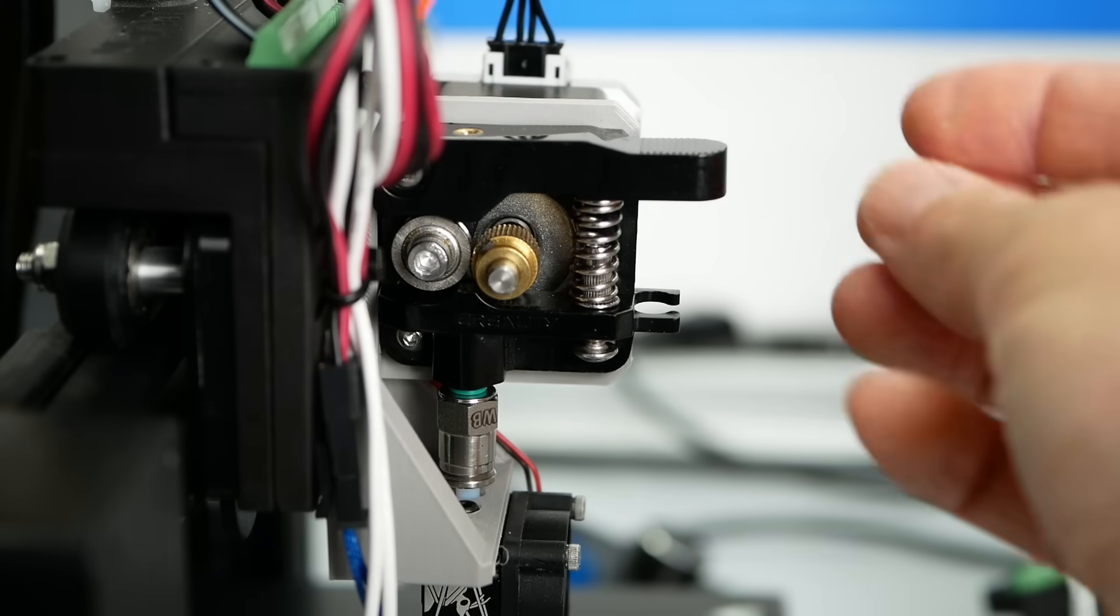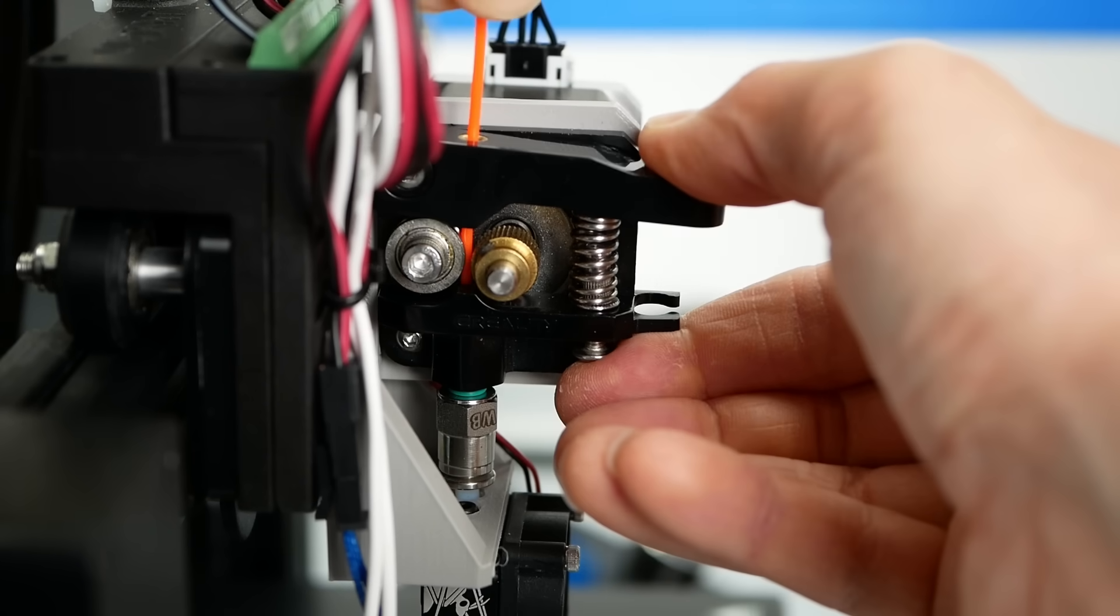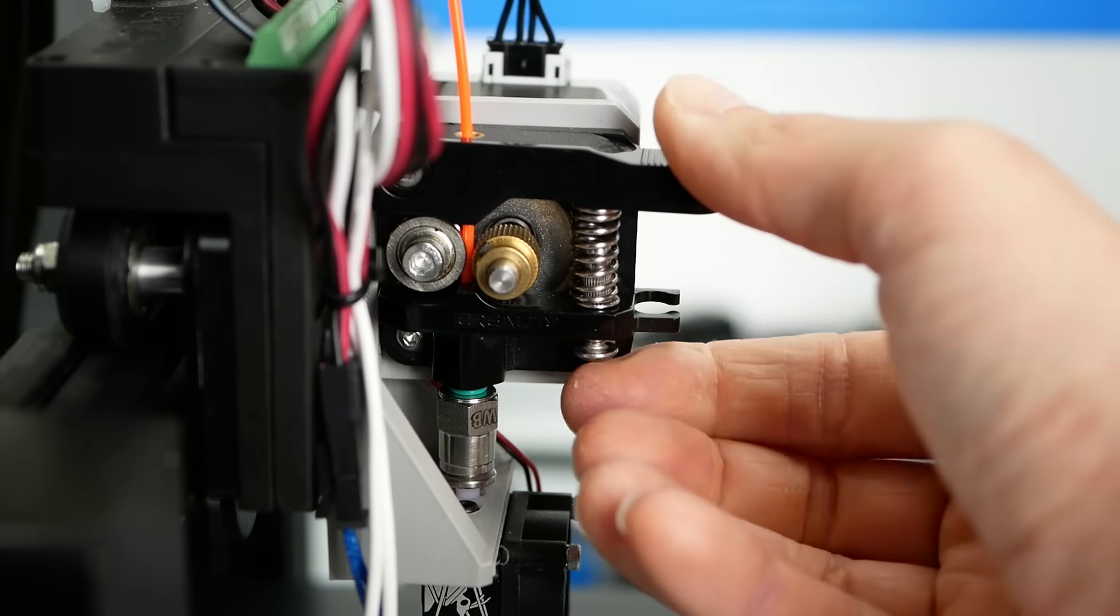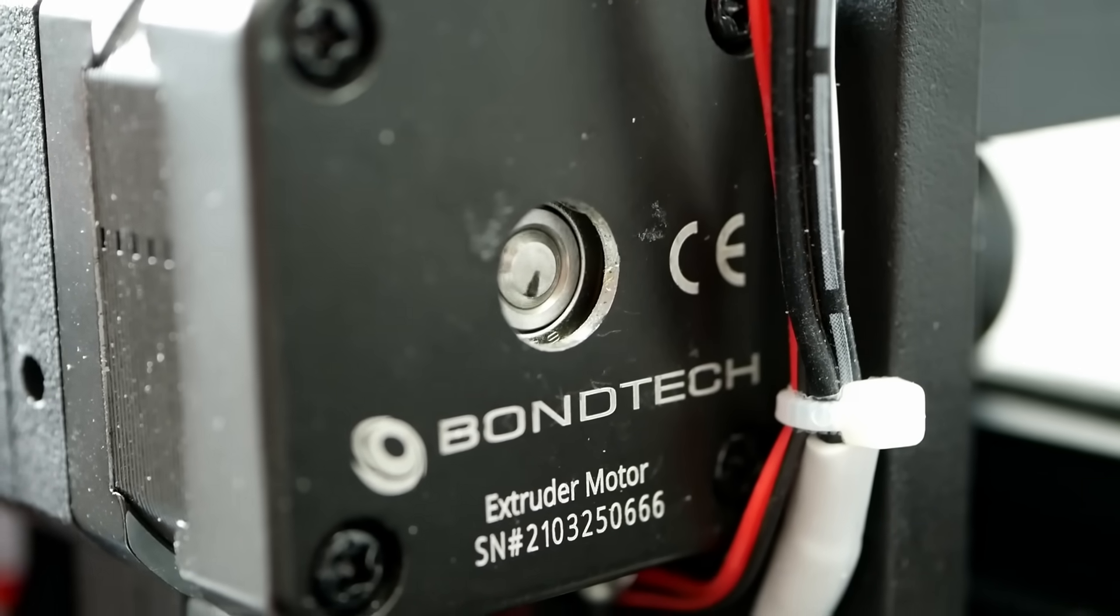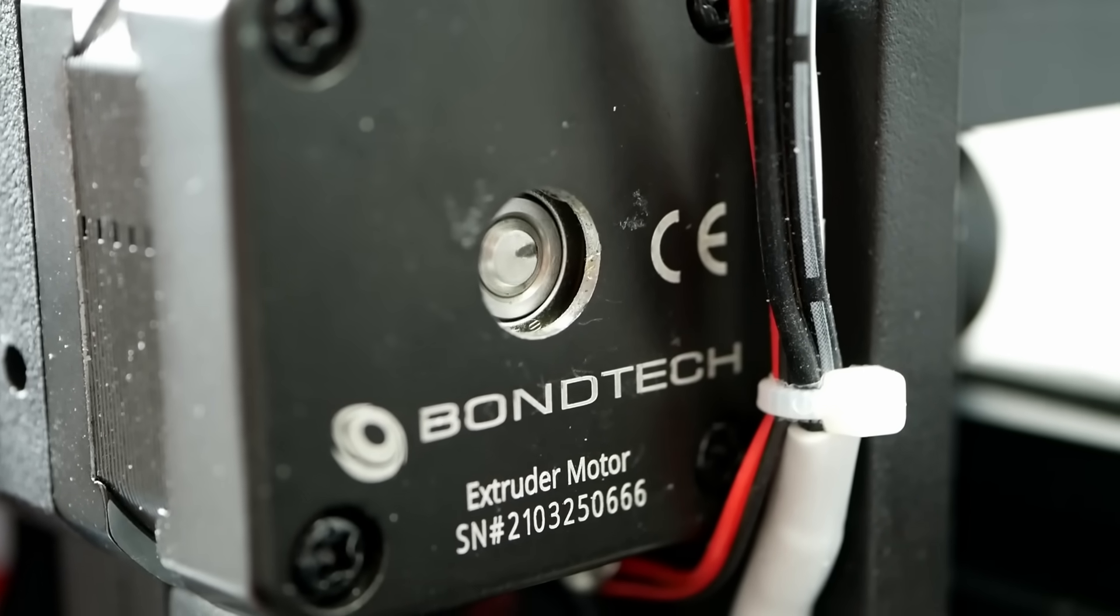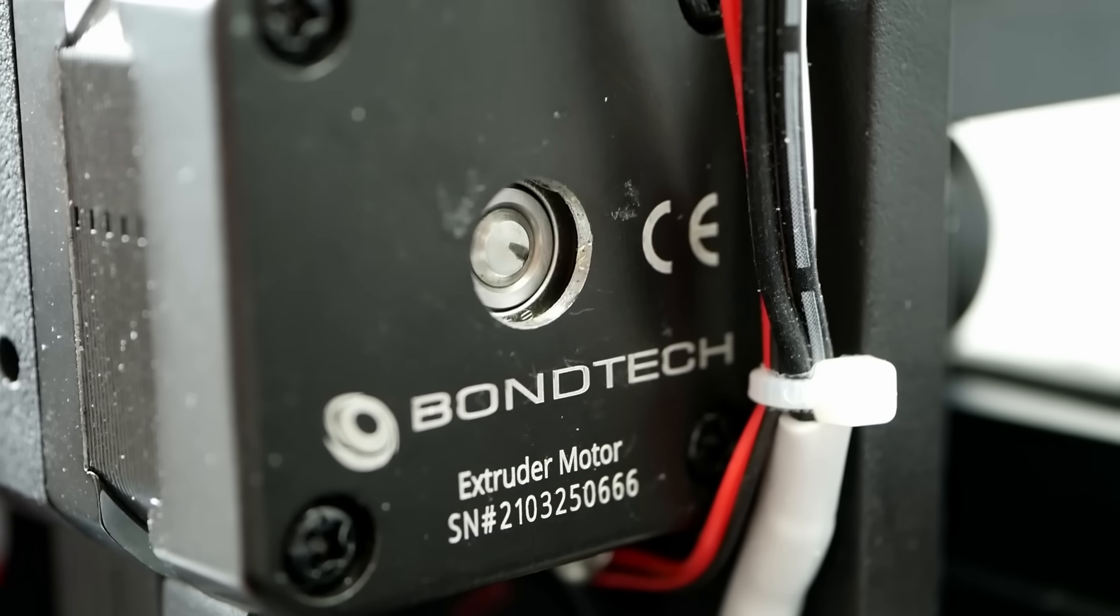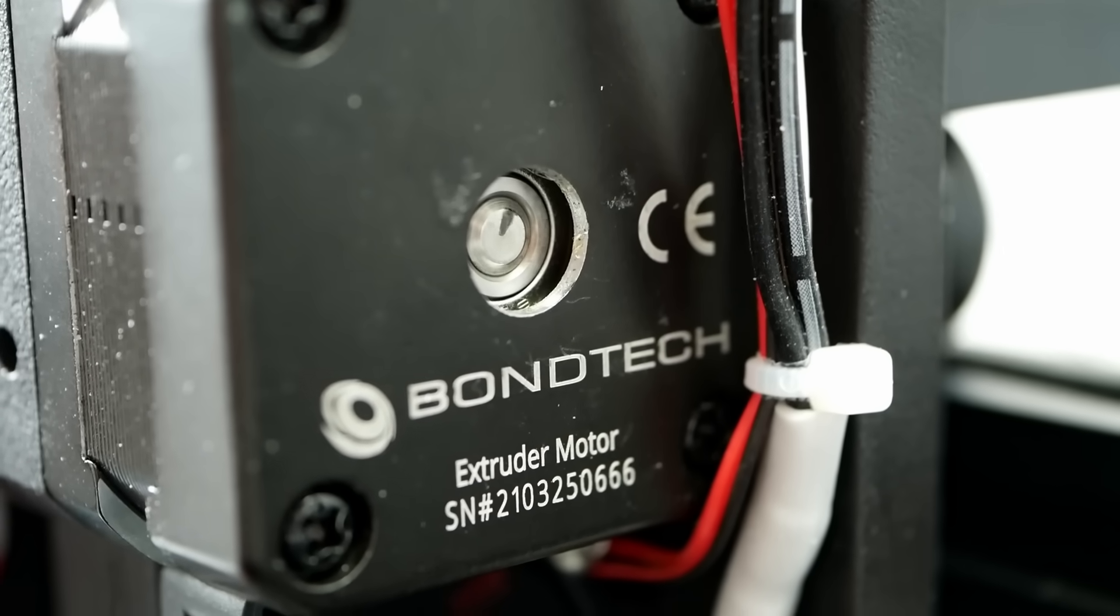So after all of this, how should you handle extruder pretension? If you don't have any problems, leave it as it is. If you see symptoms like a grinding or skipping extruder, check your filament path first. Because I promise, in 95% of the cases, the problem comes after the extruder.